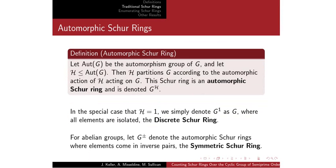Next, we have the automorphic Schur ring. For the automorphism group over G and H, which is some subgroup of G, we partition G into CIs according to what H does when it acts on G. This is the automorphic Schur ring, denoted G with superscript H. In the case that H is the trivial subgroup, this forms the discrete Schur ring, where all elements are in their own partitions. For any abelian group, G with the superscript ± is called the symmetric Schur ring — we pair each element with its inverse.